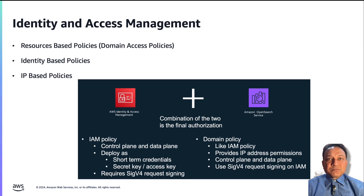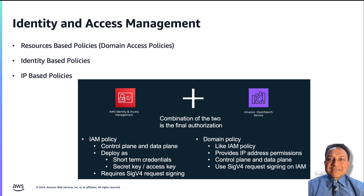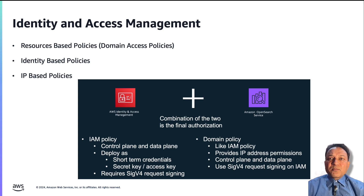First, resource-based policies, or domain access policies, are attached to a particular domain and control what actions a user or role can perform on that domain or its sub-resources. Second, identity-based policies are attached to a particular user or role, as opposed to the domain, and control what Amazon OpenSearch Service resources the user or role can access and what actions they can take. Third, IP-based policies are a special type of resource-based policy that use a condition to control which IP CIDR ranges are allowed to access a particular domain or its sub-resources.